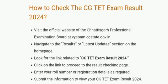How to check the CGTET Exam Result 2024. Visit the official website of the Chhattisgarh Professional Examination Board at viapam.cgstate.gov.in. Navigate to the Results or Latest Updates section on the homepage. Look for the link related to CGTET Exam Result 2024.